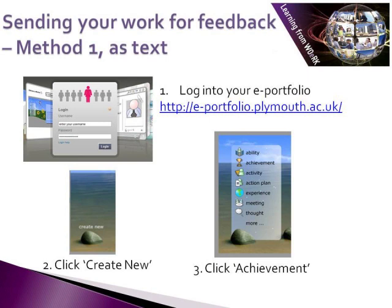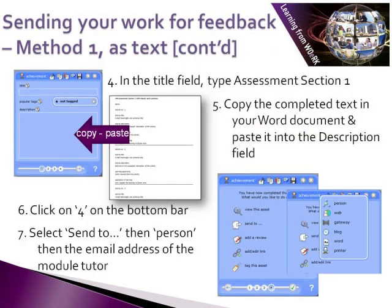You can send your work to me for feedback or comment in one of three ways. The first way is to copy the text from a Word document and paste it into the description field of your ePortfolio. To do this, log in to your ePortfolio — the web address is given in the presentation. Then click Create New and from the menu that appears, select Achievement. In the page that appears, type Assessment Section 1 in the title field, then paste the completed text into the description field. Then click For on the bottom bar, select Send To, then Person, and include the email address of the module leader.